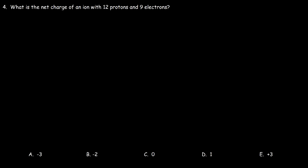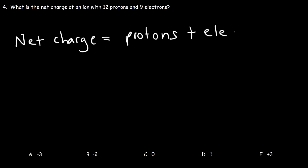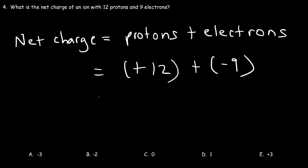Number four: what is the net charge of an ion with 12 protons and 9 electrons? The net charge is the sum of the charges of the protons and electrons. A proton has a charge of +1 and an electron has a charge of −1. So: 12 protons give +12, and 9 electrons give −9. Therefore the net charge is +3. It has a positive charge because there are more protons than electrons — the answer is E.